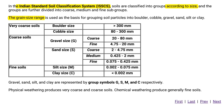First, we are going to see very coarse soils. Very coarse soils are further classified into two types, namely boulder size and cobble size. Boulder size has a grain size range of greater than 300 mm, and cobble size has a grain size range of 80 to 300 mm.